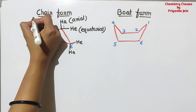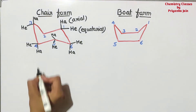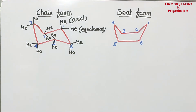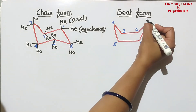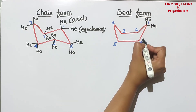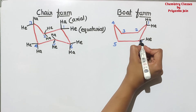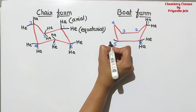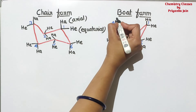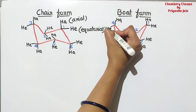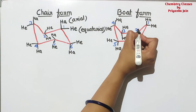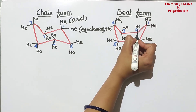That which is in the plane will be equatorial; that which is above or below the plane is called axial. At each successive carbon: equatorial and axial, axial and equatorial, equatorial and axial, axial and equatorial — all carbon atoms have two types of hydrogen.